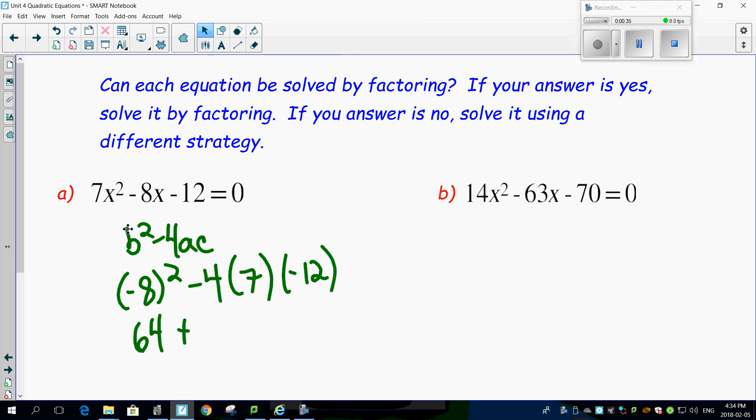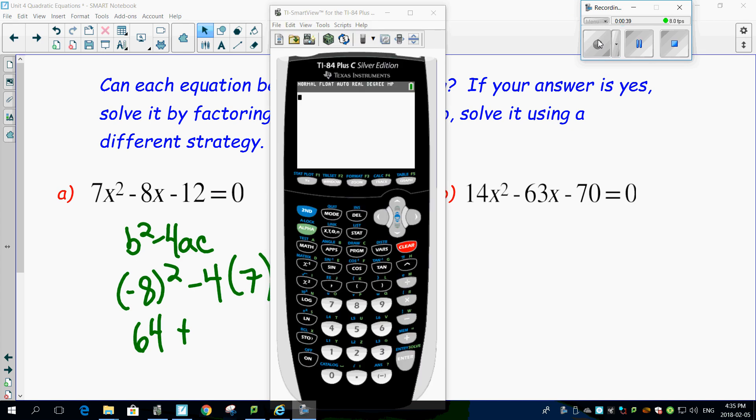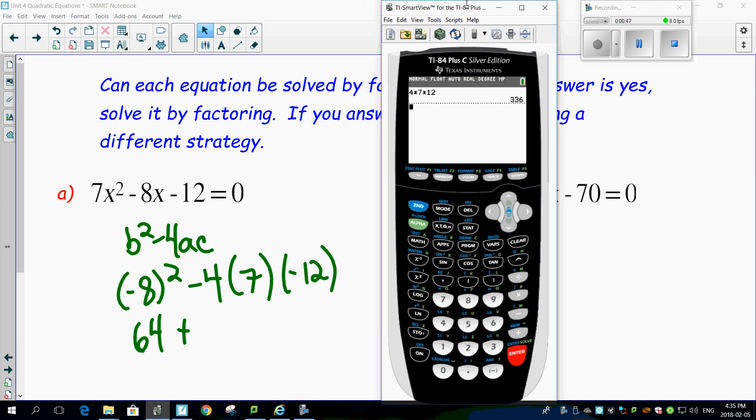So, 4 times 7 times 12. Bringing up my calculator here, 4 times 7 times 12 is going to give me a pretty number of 336.